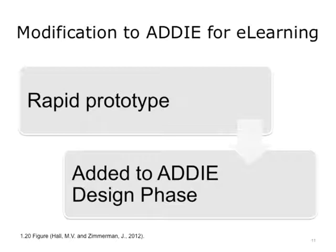ADDIE was used by trainers long before computer-based learning became prevalent. So we are adding an optional step: rapid prototype. For best results, the development process for CD-ROMs or more commonly used web-based training programs should use a modified ADDIE model. A rapid prototype phase is inserted after or is an extension of the design phase. The rapid prototype is simply a quickly assembled module that can be tested with the learner audience early in the design phase. The evaluation looks at how well students responded to the content, how effective the learning activities are, how well the program runs on the computer, and the internet technology. Based on the feedback, the designer can revise and develop another prototype. This iterative process continues until there is agreement and confidence that the prototype actually works during implementation.